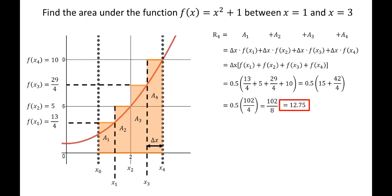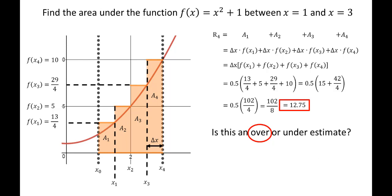There's our right endpoint estimate for the area under this curve. Do you suppose this estimate is an overestimate or an underestimate? If you chose over, you're correct. From the graph, the orange area includes some area that's not actually underneath the curve — it adds these little extra corners. It is an overestimate, and the specific reason is that this is an increasing function. With an increasing function, a right endpoint estimate gives you an overestimate.